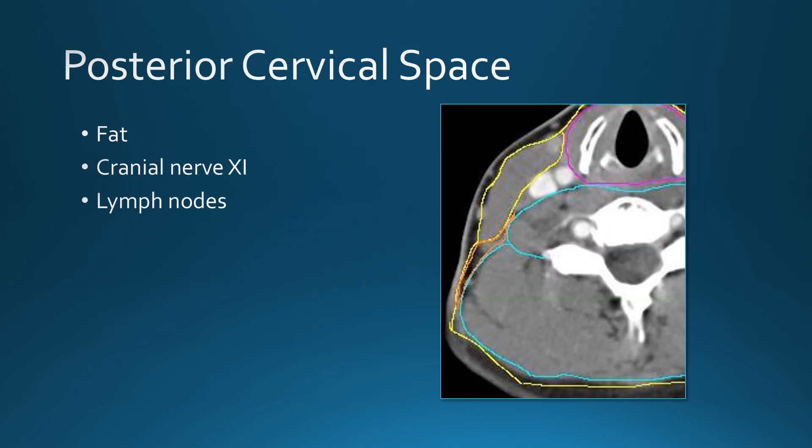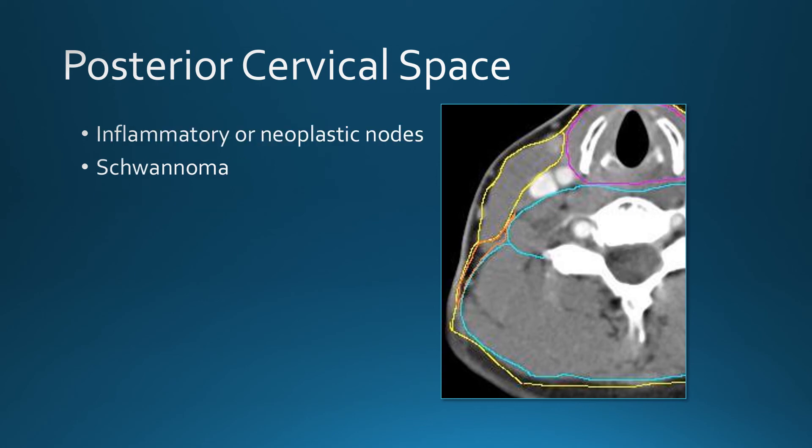Finally, the posterior cervical space: not much is in there — just fat, cranial nerve 11, and lymph nodes. Most lesions seen in this space are inflammatory or neoplastic lymph nodes, and very rarely a schwannoma.